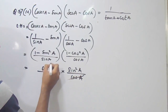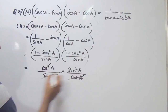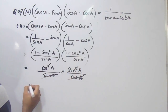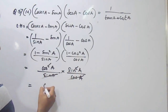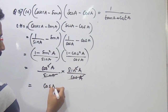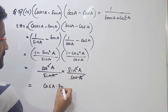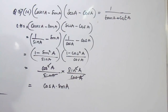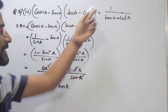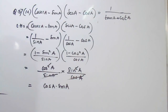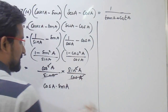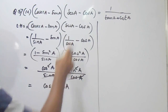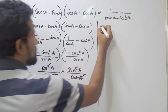So one term will get cancelled here also, and we will get cos A into sin A. So now we will try to simplify the RHS and we will try to get this same term in the RHS also.